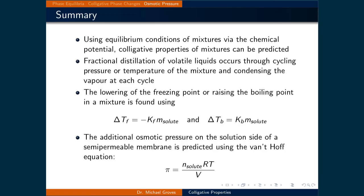In this lecture, we saw that using equilibrium conditions of mixtures defined by the chemical potential can predict colligative properties. One example is fractional distillation, where separation of volatile liquids occurs through cycling pressure or temperature and condensing the vapor at each cycle. A second example predicts the lowering of the freezing point or raising of the boiling point, given by delta Tf equals negative Kf times molality of the solute, and delta Tb equals Kb times molality of the solute. The final example is osmotic pressure, predicted using the van't Hoff equation: pi equals n solute times R times T divided by V.